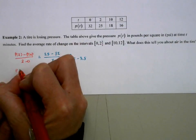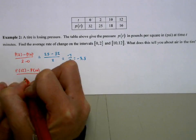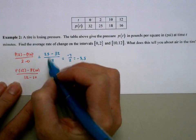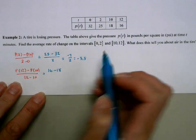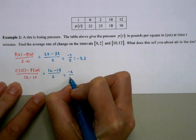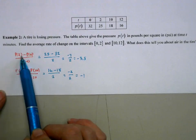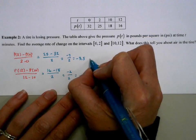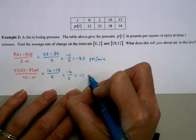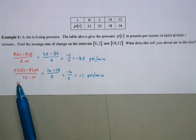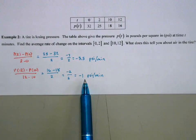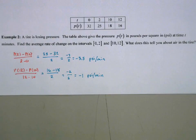Let's look at p of 12 minus p of 10 over 12 minus 10. From our table, we get 16 minus 18 over 2, which is negative 1. I'm going to attach some units to this. Easy units: whatever the units are on the top over the units on the bottom. So here is my pressure in psi. This is going to be psi per minute. Well, from 0 to 2, we lost on average 3.5 psi per minute. From 12 to 10, we were only losing about 1 psi per minute. I say losing because it's negative. The pressure is decreasing.